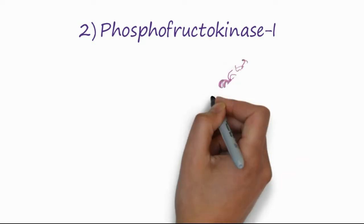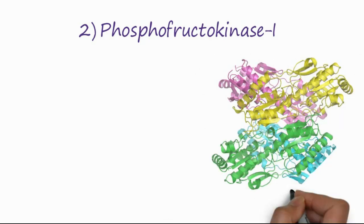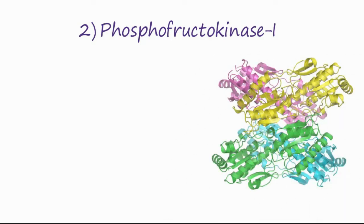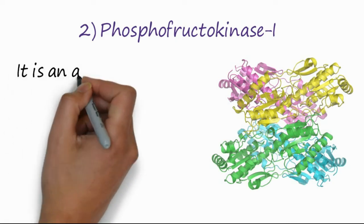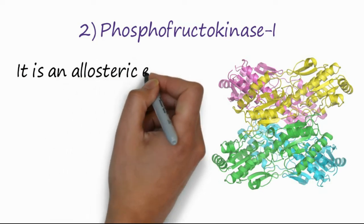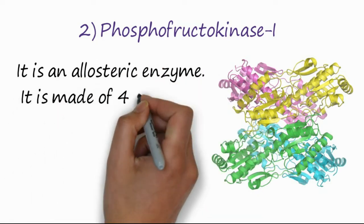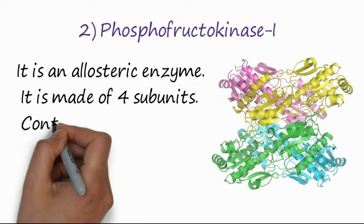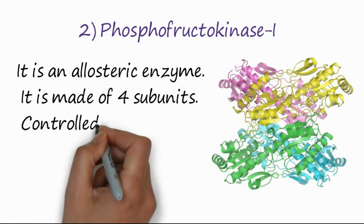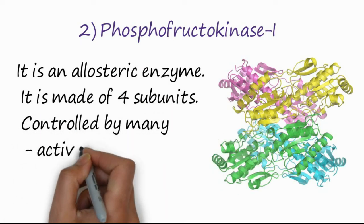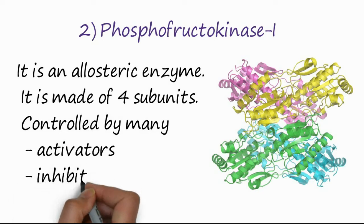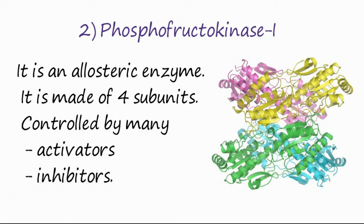The second enzyme is phosphofructokinase. This enzyme is one in which ATP is consumed. It is an allosteric enzyme made of four subunits. The activity of this enzyme is controlled by many activators and inhibitors.